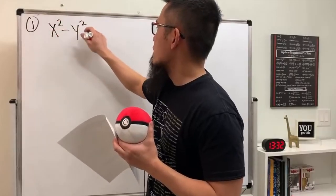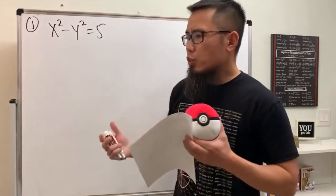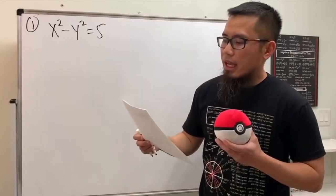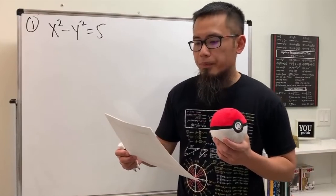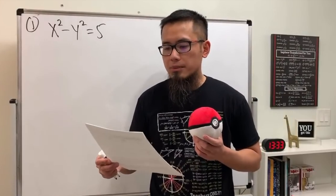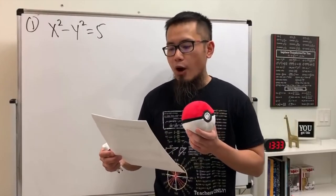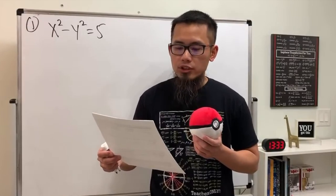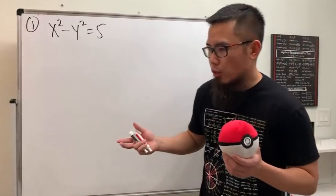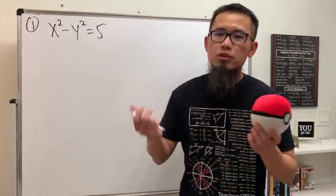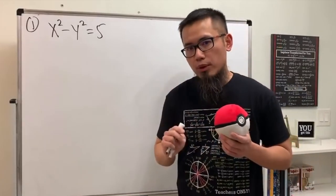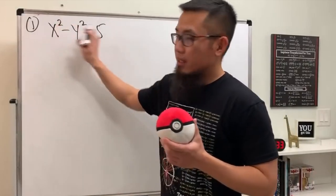We have a particle moving along this curve. The equation shouldn't be too bad. It says as it reaches the point (3, -2), the y-coordinate is decreasing at a rate of 0.9 centimeters per second — how fast is the x-coordinate changing at this instant? The key is to draw two pictures first. This is given.